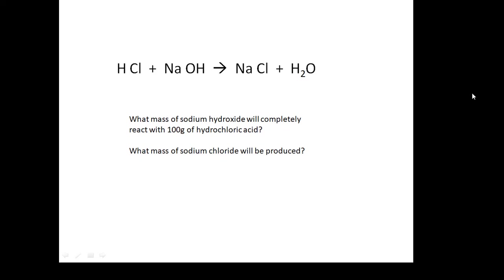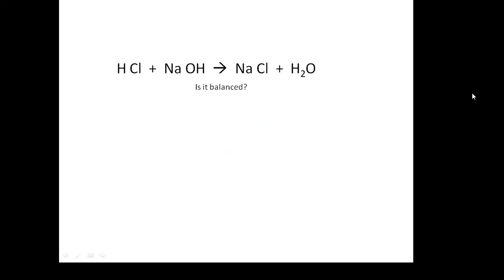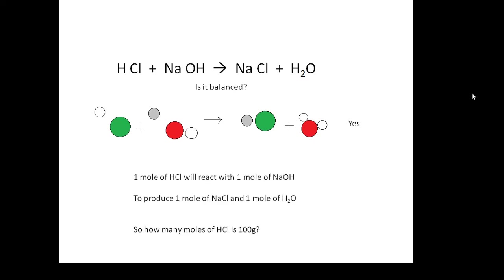So how do we do this? First of all, is the equation balanced? Have a look through it — hopefully you'll agree that it is. It is a balanced equation. Looking at the equation, one mole of hydrochloric acid (HCl) will react with one mole of sodium hydroxide, and that will produce one mole of sodium chloride and one mole of water. So it's one mole plus one mole going to one mole plus one mole.